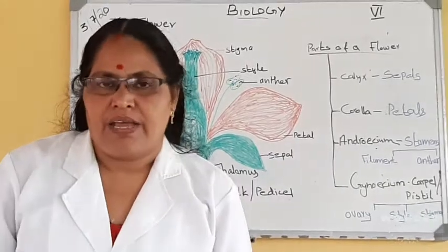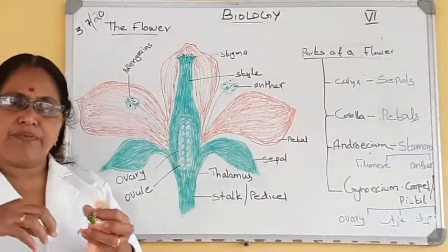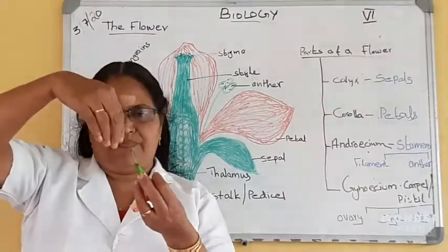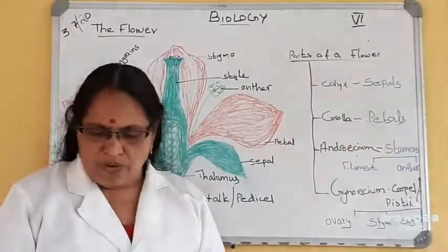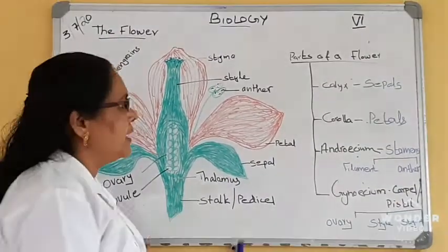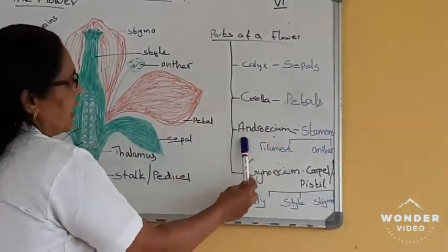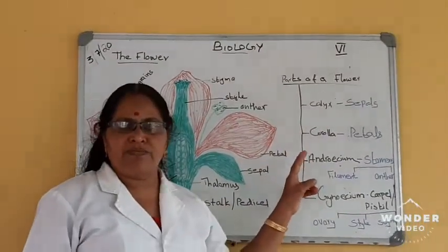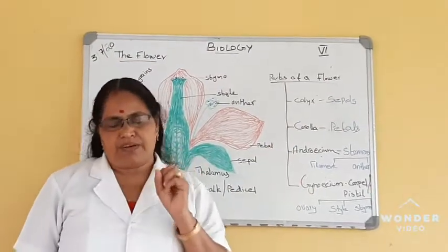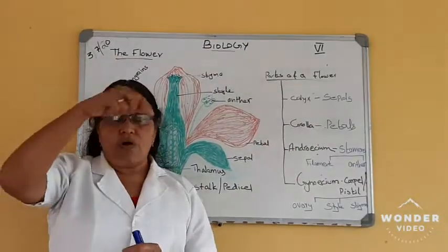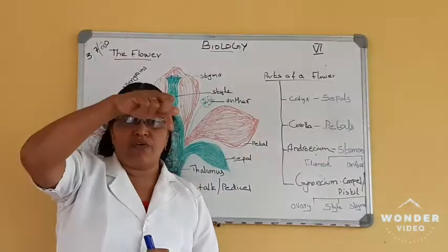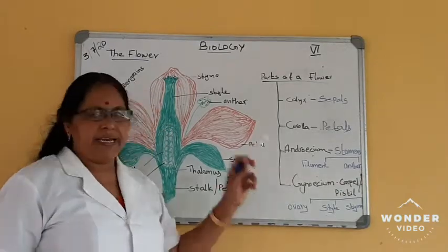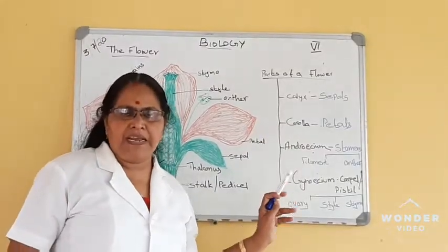All the parts of the flower are arranged in four whorls. Whorl means round. The four whorls of the flower are calyx, corolla, androecium, and gynoecium. These are the technical terms for the four whorls of the flower. Let us study each part in detail.